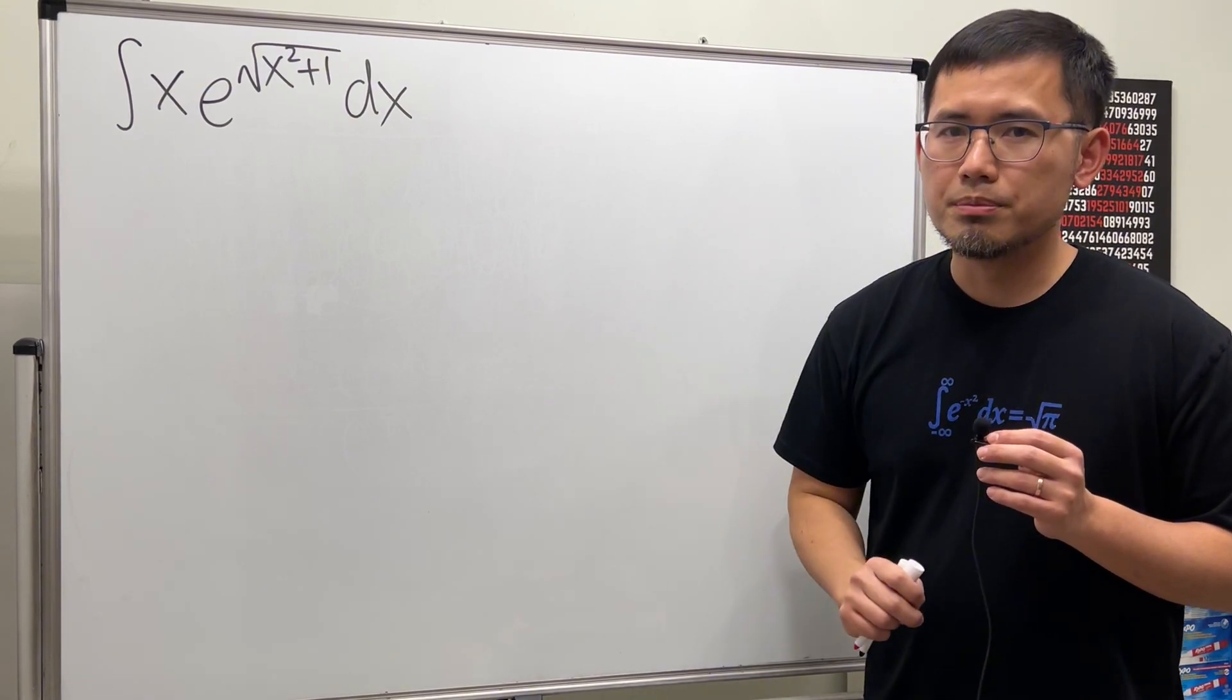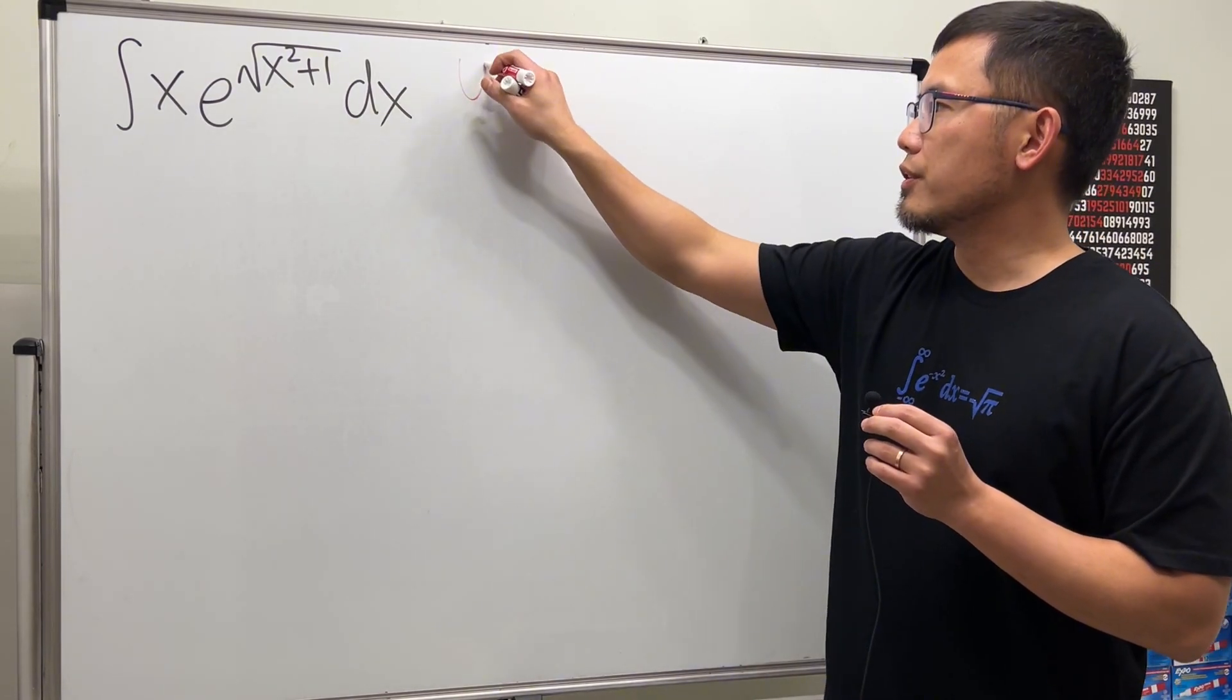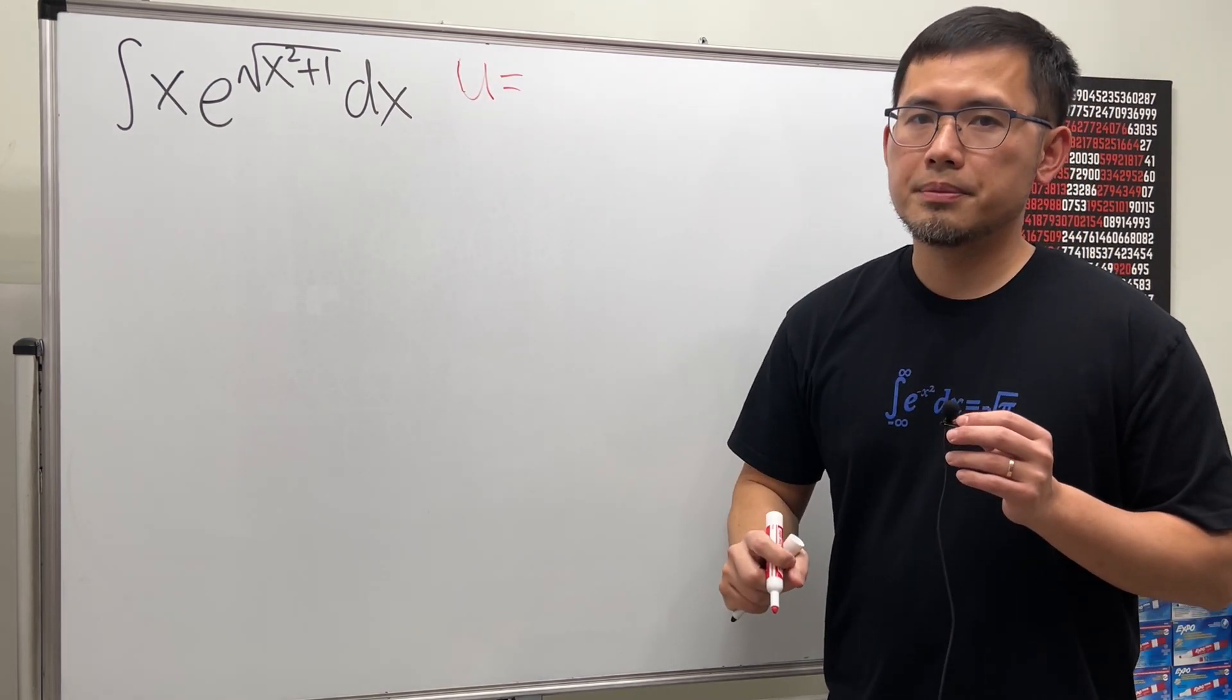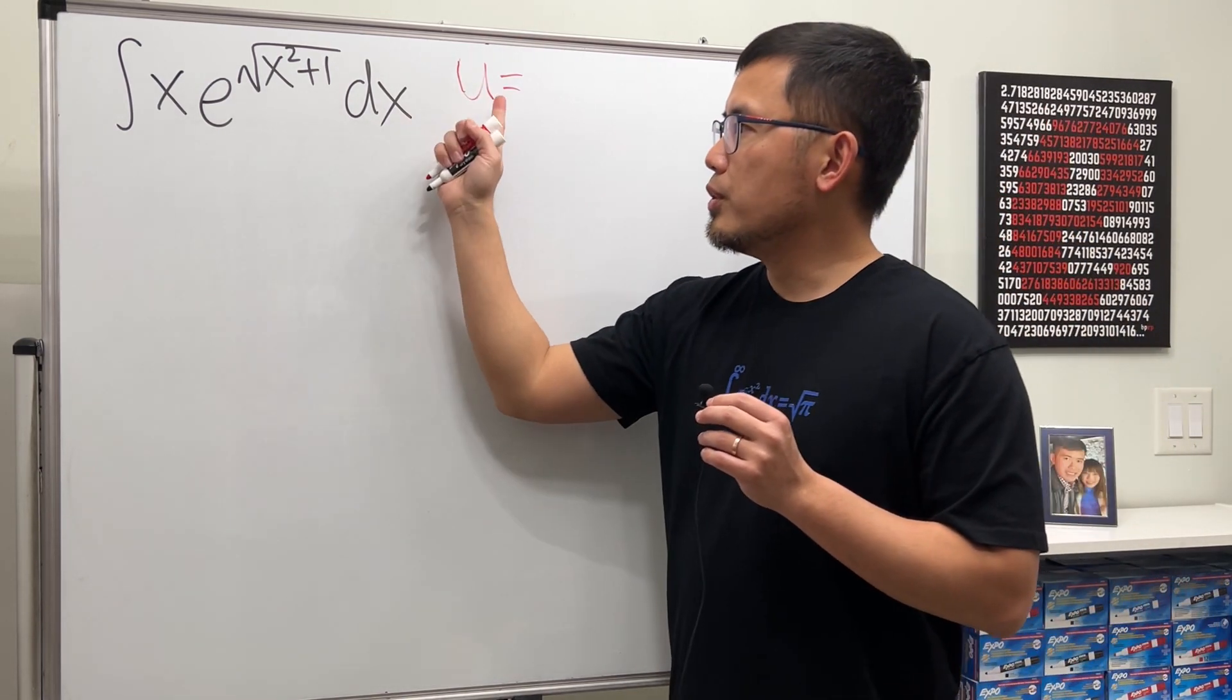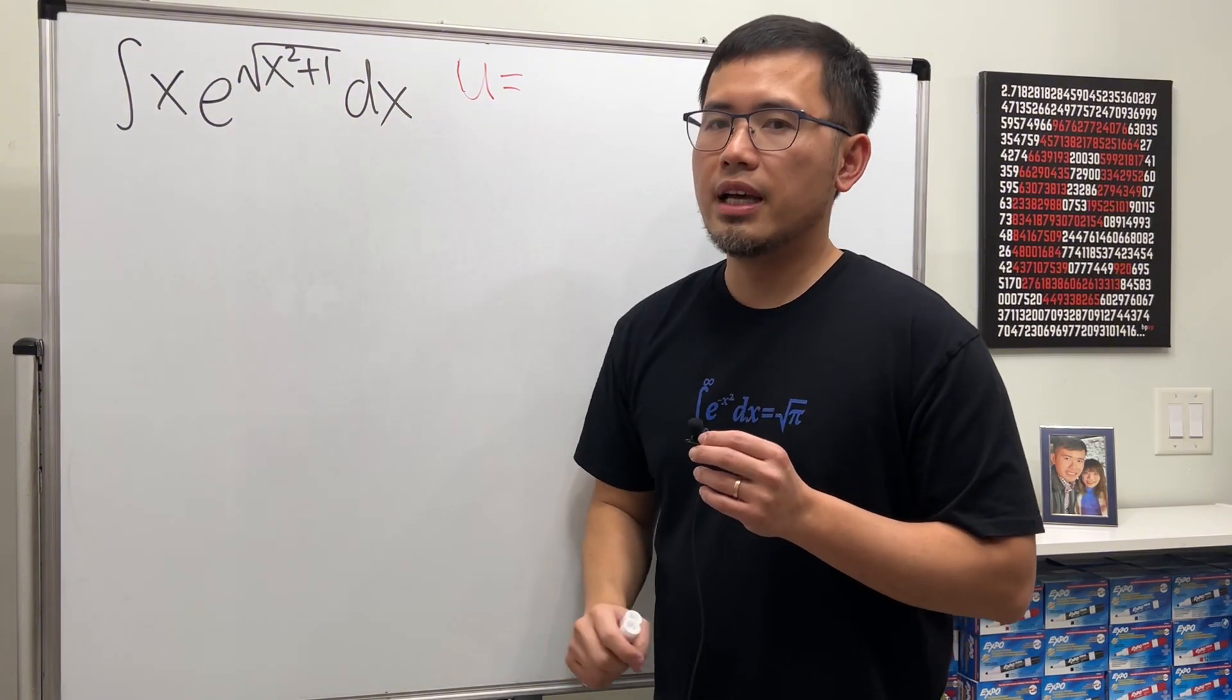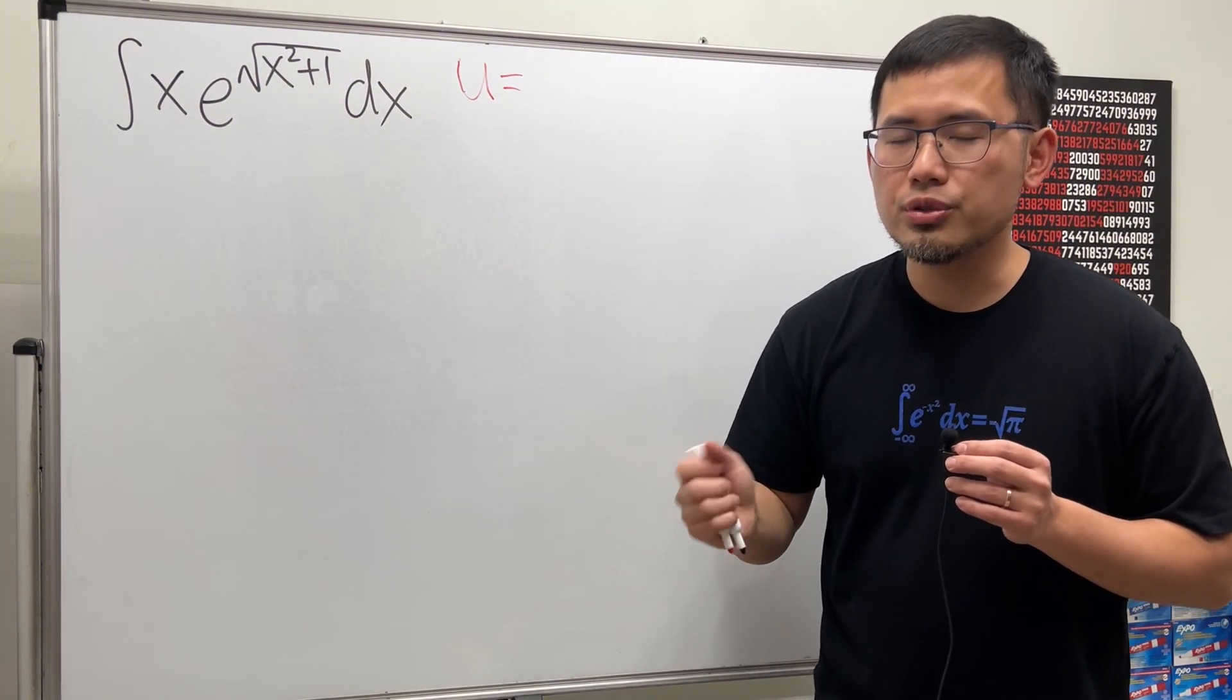So the first question is, u should be equal to what? I will tell you, if you put u equal to the inside, then you actually need another substitution after this.